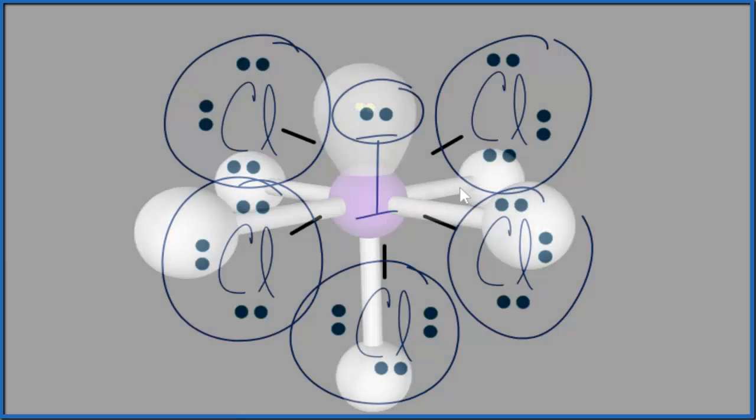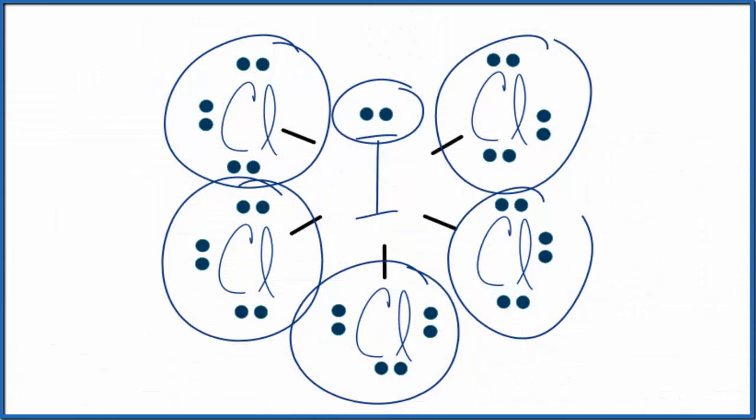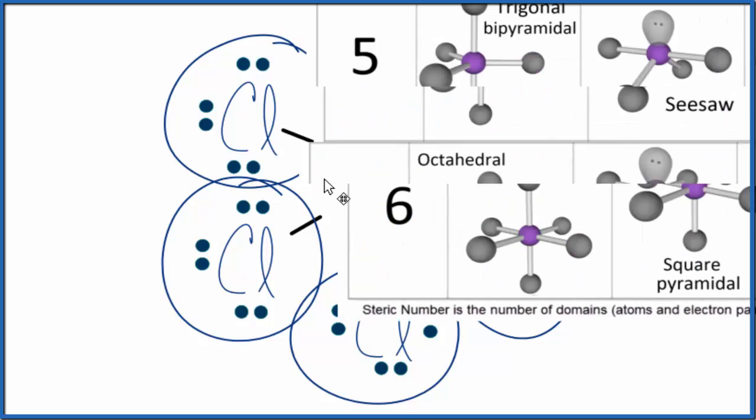Let's go back to our Lewis structure. So if we couldn't visualize the square pyramidal just by looking at the Lewis structure, there's two other ways we could do this. One is we could count up the things attached to the central iodine to find the steric number. So there's one, two, three, four, five atoms and one lone pair. So let's take a look at that.